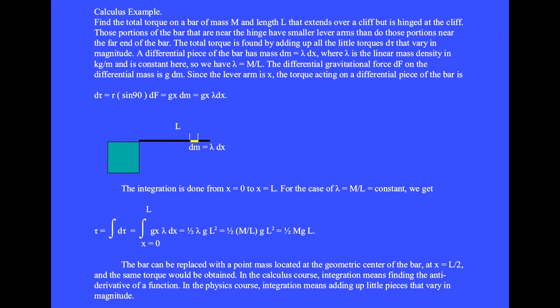A differential piece of the bar has mass dm equals lambda dx, where lambda is the linear mass density in kg per meter and is constant here, so we have lambda equals M over L. The gravitational force, dF, on the differential mass is g dm.